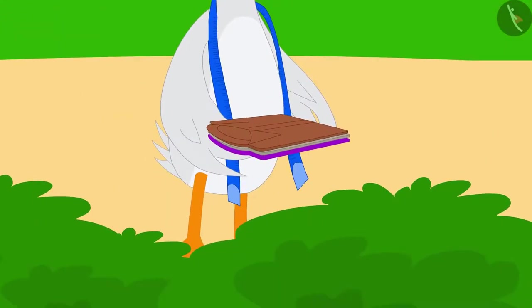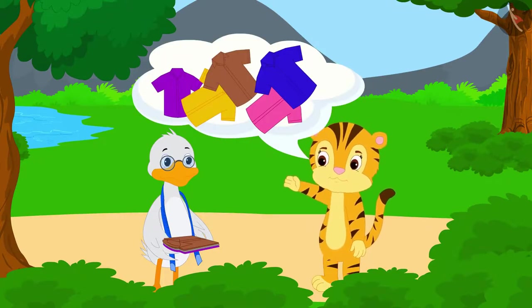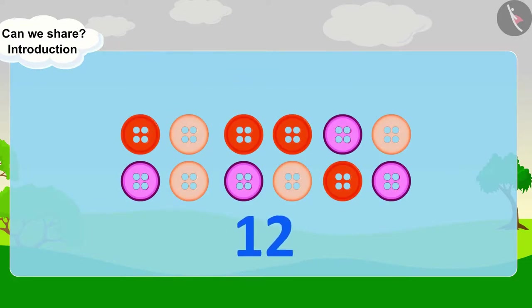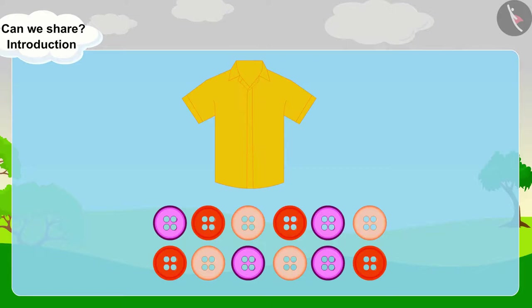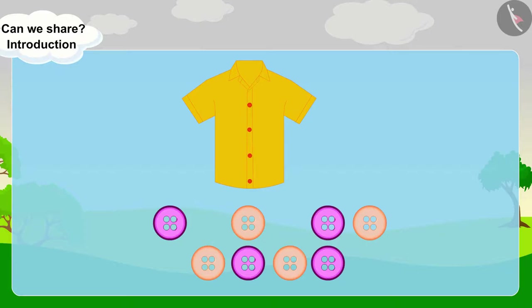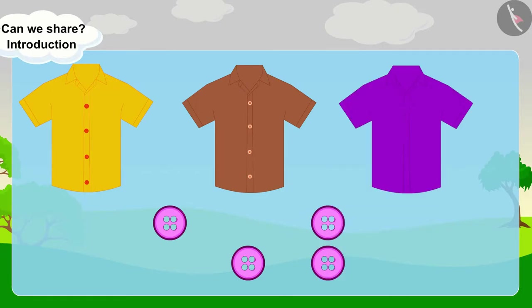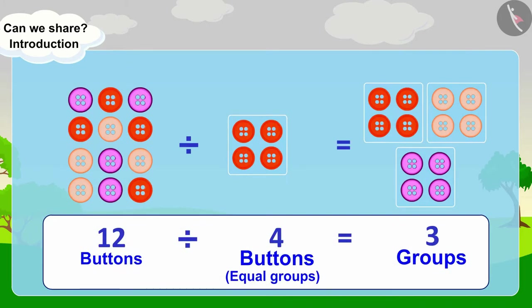What does Barbole the tailor have in his hand? Shere Khan's mother asked Barbole the tailor to make some shirts for Shere Khan's special friends. The tailor attaches four buttons to each shirt. He has twelve buttons — let's see how many shirts he will be able to put buttons on. After putting four buttons on the first shirt, the tailor had eight buttons left. After the second shirt, four buttons remained. After putting four buttons on the third shirt, all the buttons are over. So twelve buttons were divided into three groups of four.